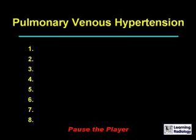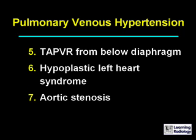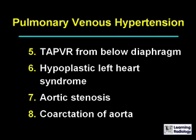The differential diagnosis is of pulmonary venous hypertension. There are eight major causes. The eight major causes of pulmonary venous hypertension are mitral stenosis (acquired or congenital), congestive heart failure, left atrial myxoma, cor triatriatum, total anomalous pulmonary venous return from below the diaphragm, hypoplastic left heart syndrome, aortic stenosis, and coarctation of the aorta.